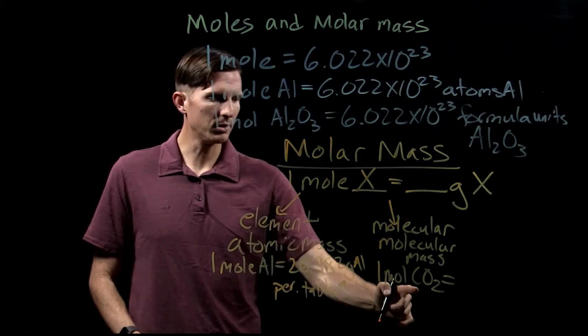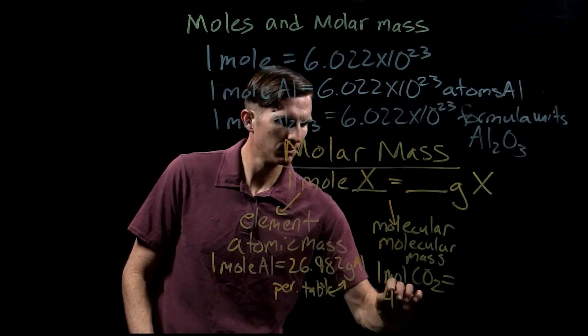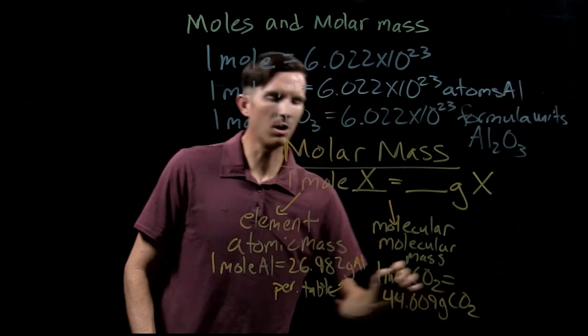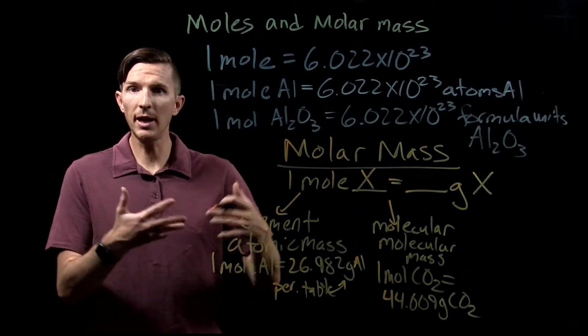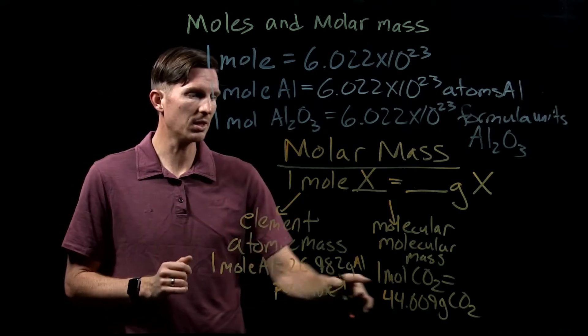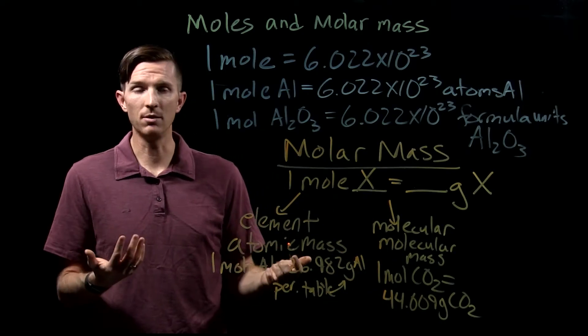I would add up one carbon and two oxygens, and I would get 44.009 grams of carbon dioxide. That's the molecular mass of carbon dioxide. I would not talk about the atomic mass of carbon dioxide because it's a molecule, not a single atom.